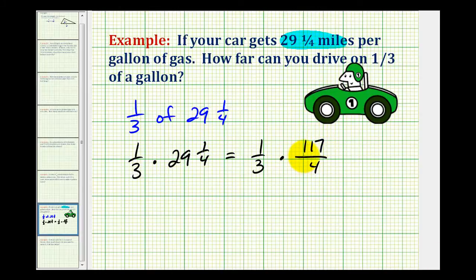And before we multiply, we should try to simplify. And it may be hard to see, but one hundred seventeen is divisible by three. The reason I know that is because of a divisibility rule: if the sum of the digits is divisible by three, then so is the number.